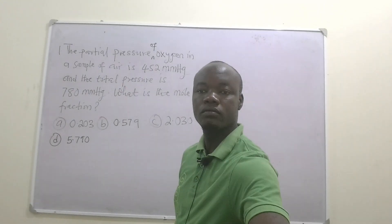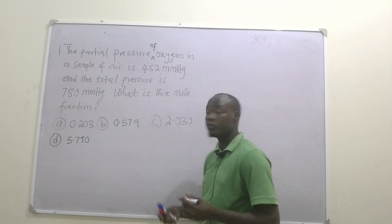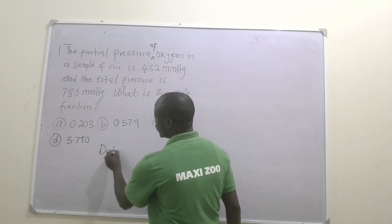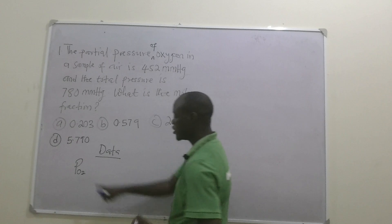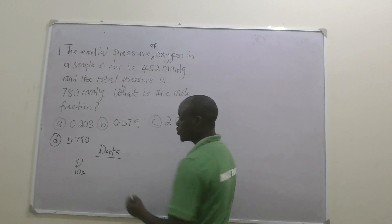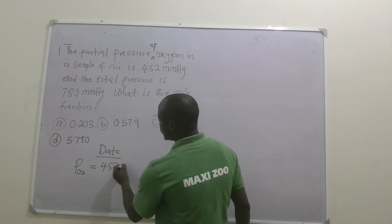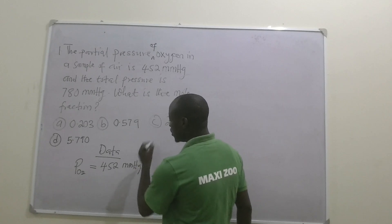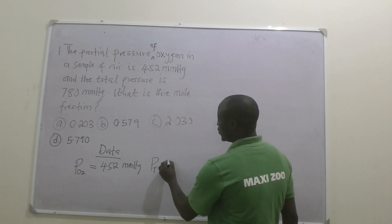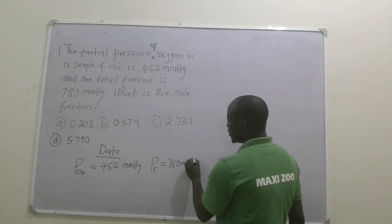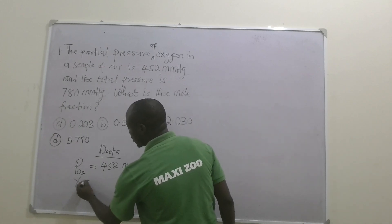Let's extract the data. We have the partial pressure of oxygen — P of oxygen — which is equal to 452 millimeters of mercury. And then we have the total pressure, P total, which is equal to 780 millimeters of mercury.